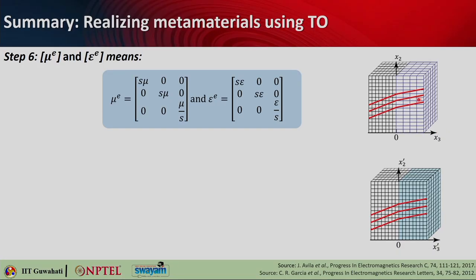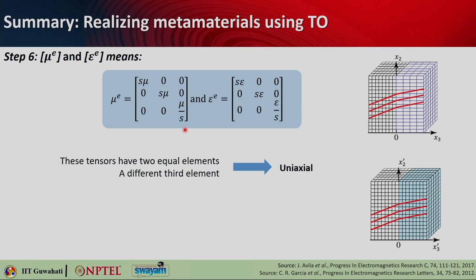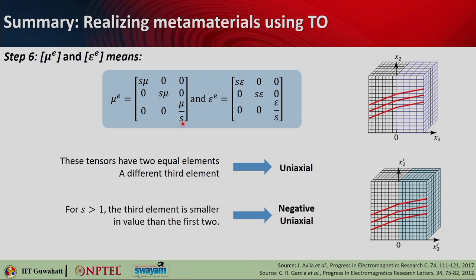The equivalent μ_E and ε_E tensors are uniaxial — two elements are equal and the third is different. When s > 1 (stretching), the third component is smaller than the other two, so the extraordinary permittivity is smaller than the ordinary: this is a negative uniaxial metamaterial (NUM). This can be used to make two closely-spaced antennas on a chip feel as if they are far apart, by placing a negative uniaxial metamaterial in the gap between them.